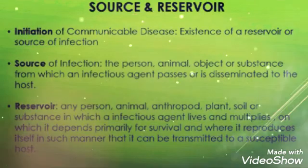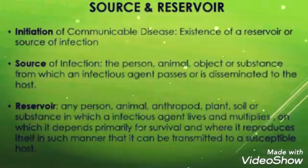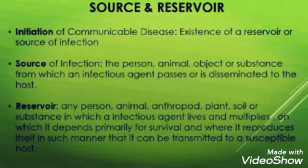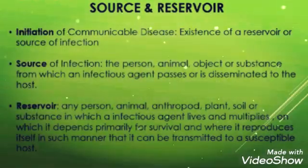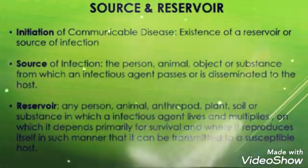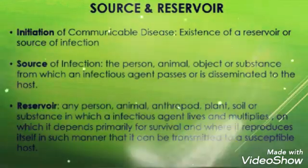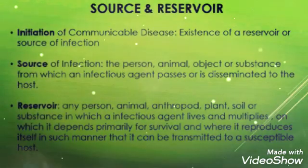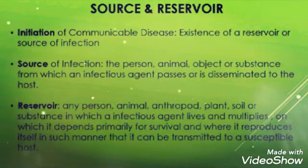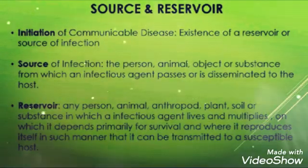Now, reservoir: any person, animal, arthropod, plant, soil, or substance in which an infectious agent lives and multiplies, on which it depends primarily for survival, and where it reproduces itself in such a manner that it can be transmitted to a susceptible host. The reservoir is something in which the bacteria sit and grow. If bacteria sits on a person, it will multiply and grow there. If it sits on plastic or metal, it also multiplies and grows. So sources and reservoirs are essentially the same thing — sources are where the agent survives, and reservoirs are where it gets nourishment to grow and multiply.